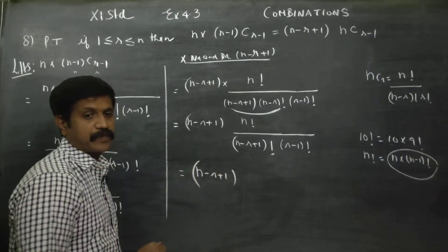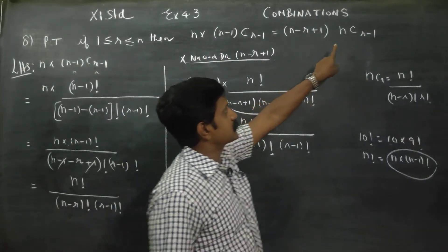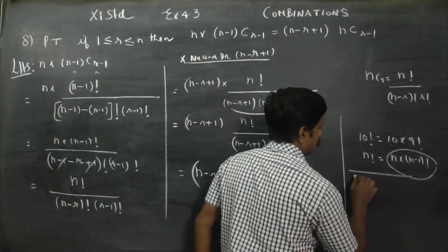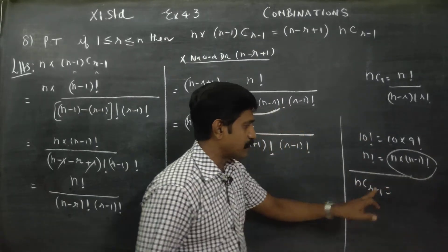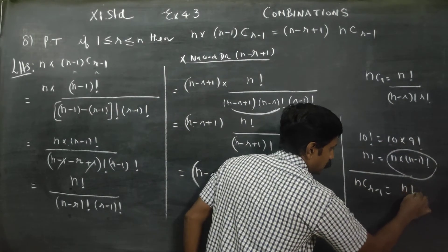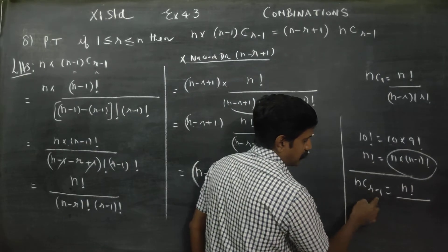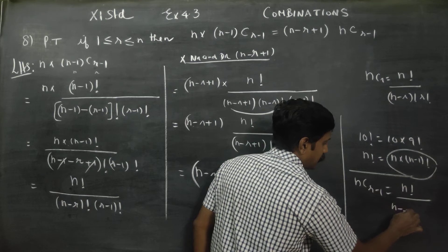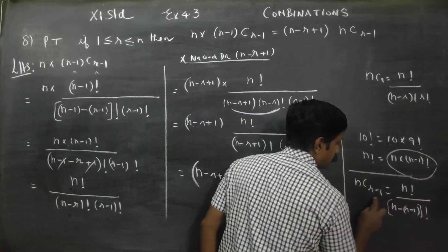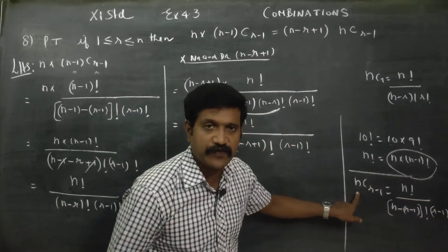Now I am going to the RHS. Let me expand nCr minus 1. What is nCr minus 1? Using the nCr formula: n factorial by n minus r factorial, with r replaced by r minus 1 gives n minus r minus 1 factorial into r minus 1 factorial. That is the nCr minus 1 formula.